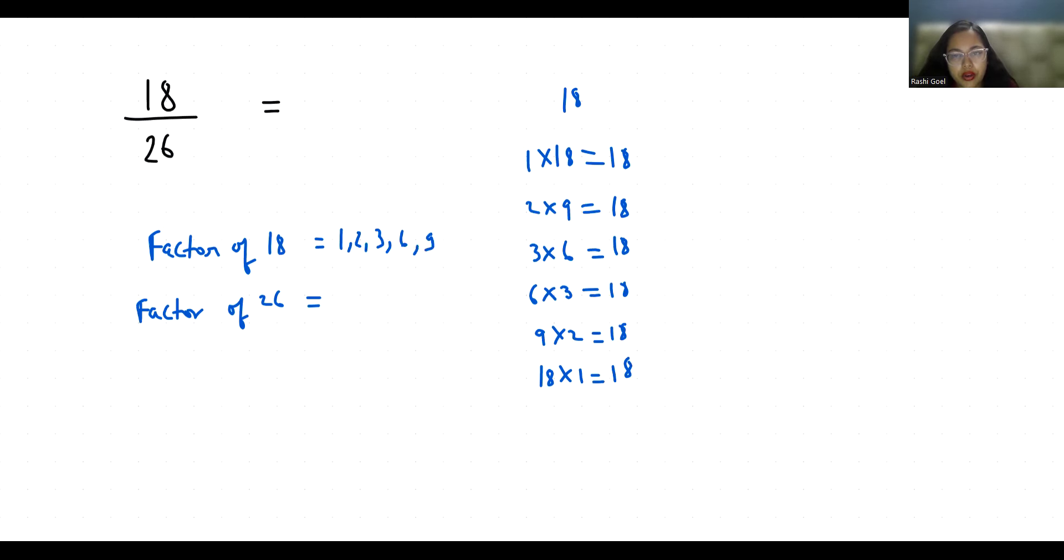Now 26. 1 times 26 is 26, 2 times 13 is 26, 13 times 2 is 26, and 26 times 1 is 26.